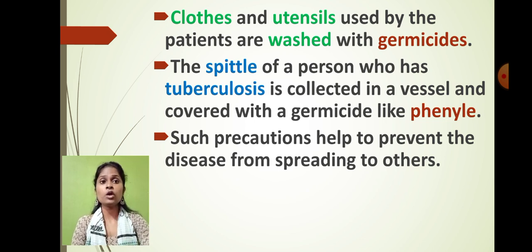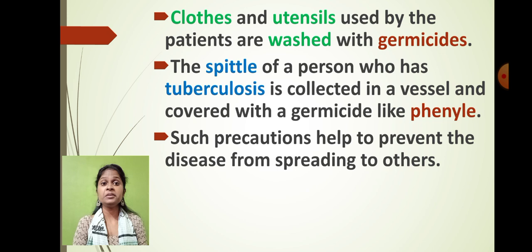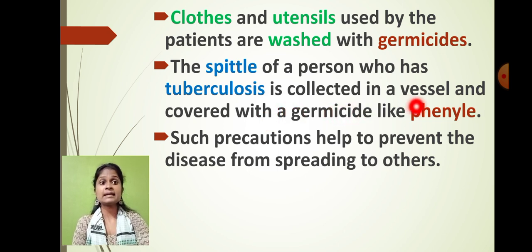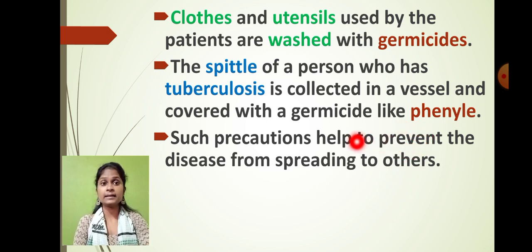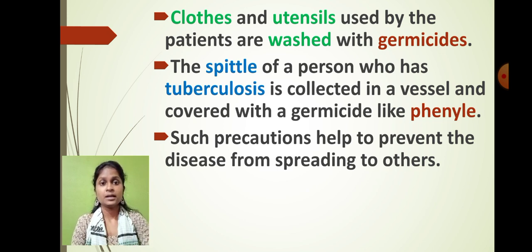Always remember that the clothes and utensils used by a patient are washed with germicide. All these contagious diseases are rapidly spread from one person to another. If we use the patient's clothes and utensils, we might also get the disease. The spittle of a tuberculosis patient is collected in a vessel covered with germicide called phenyl, because germs from tuberculosis can spread into the air and enter a healthy person's body.